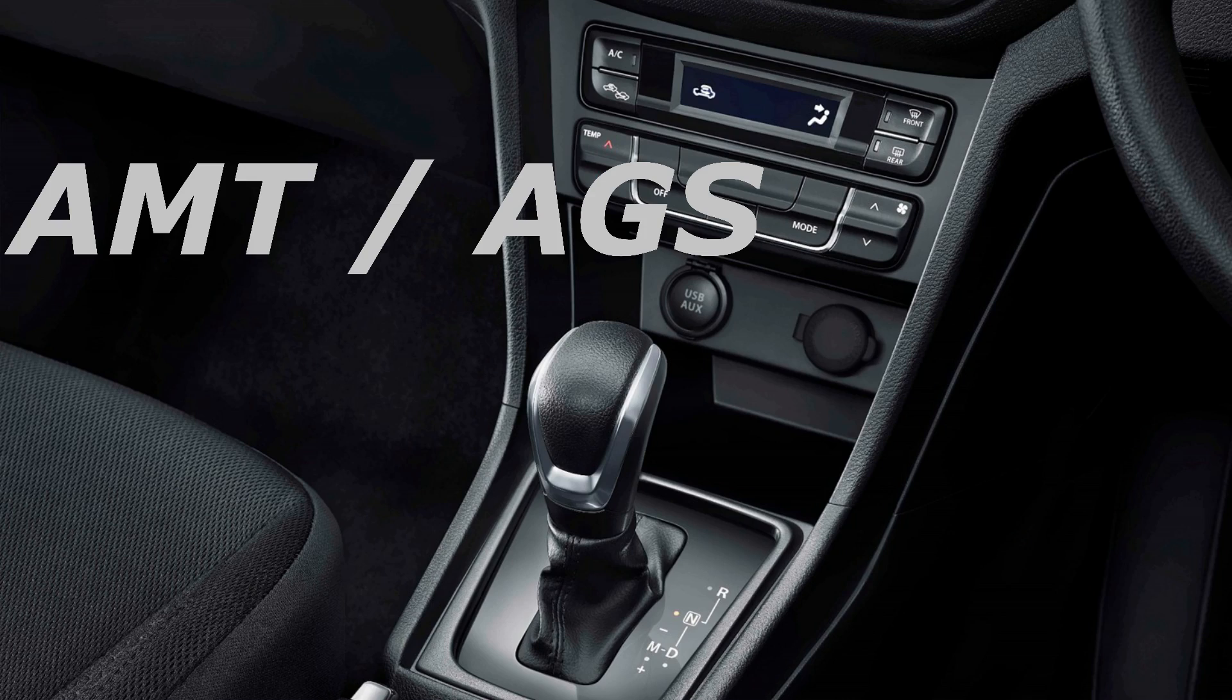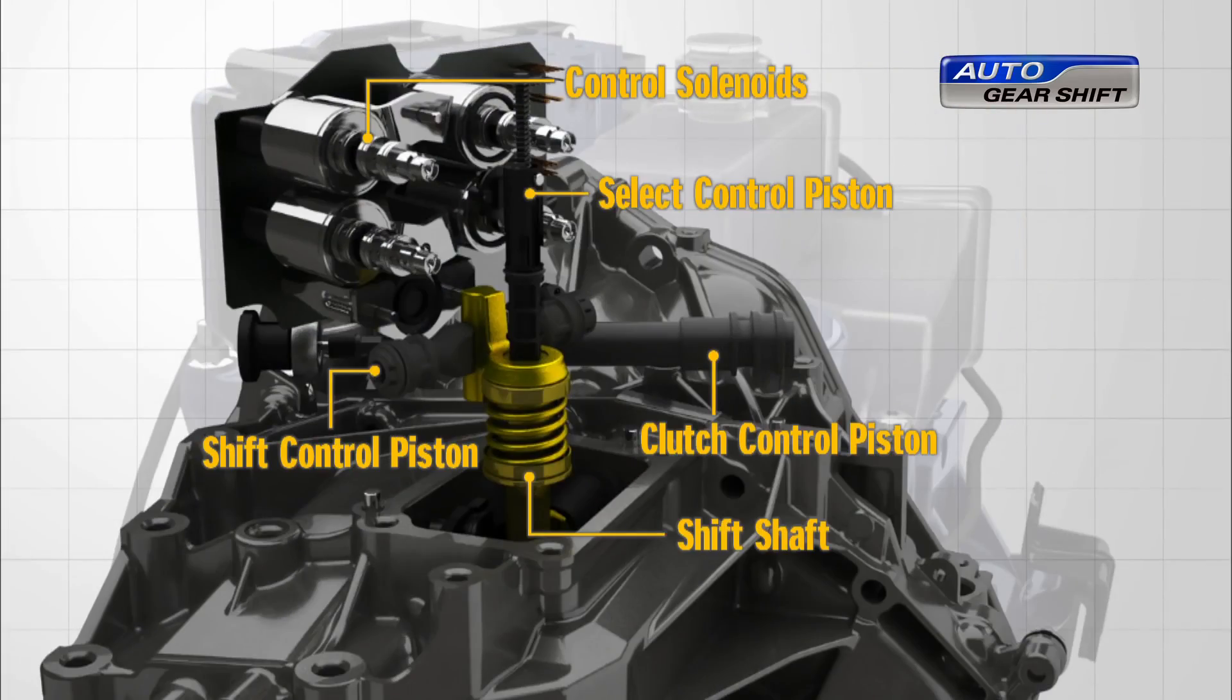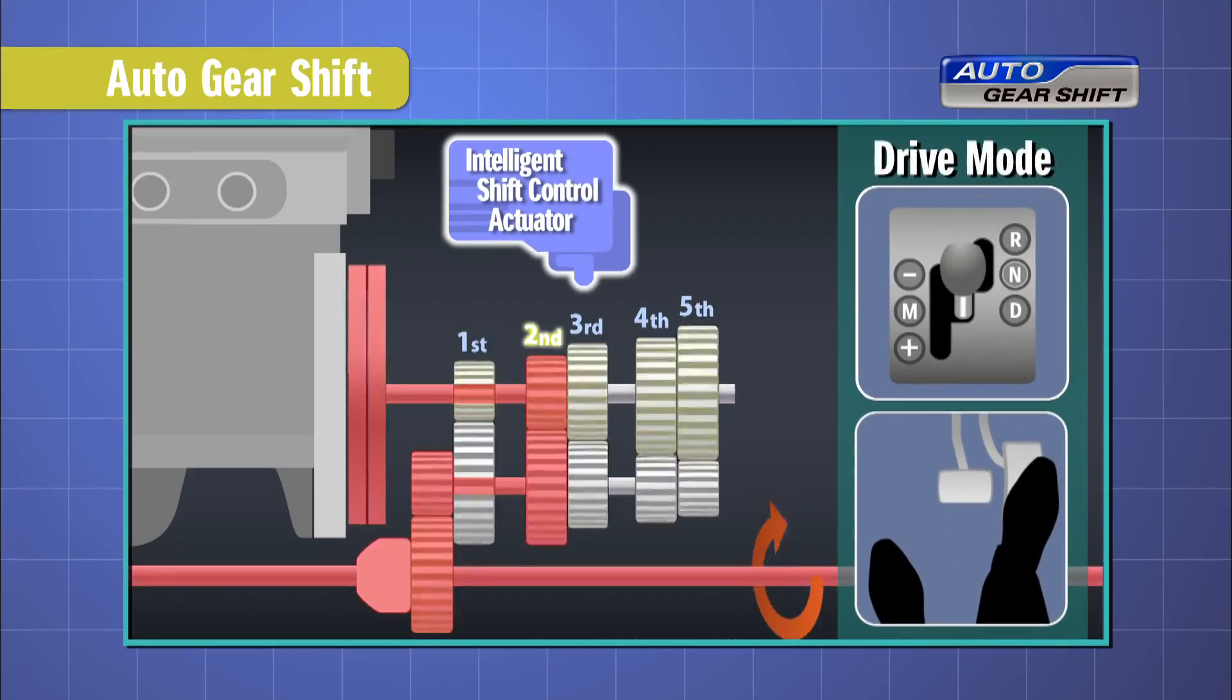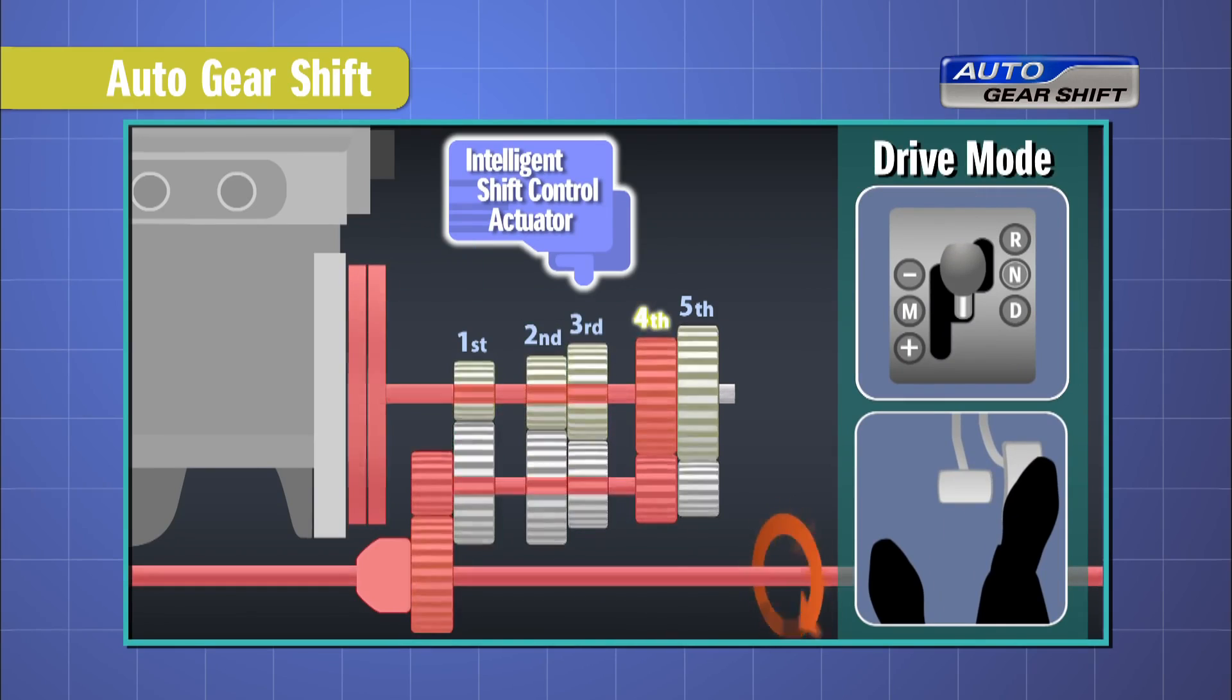Fifth type of transmission is AMT, or automated manual transmission. It is also called AGS, auto gear shift transmission. This is a simple transmission. It is basically a manual transmission where the clutch and gear shifts are controlled electronically by an ECU module.